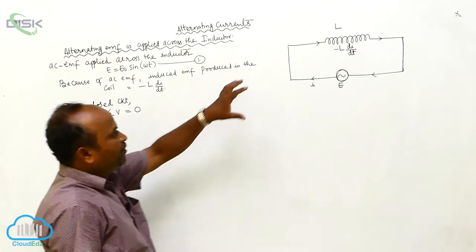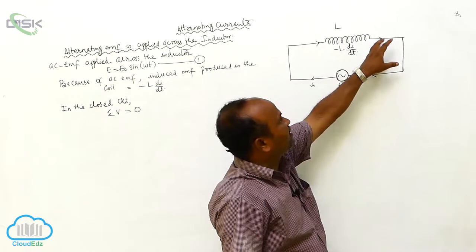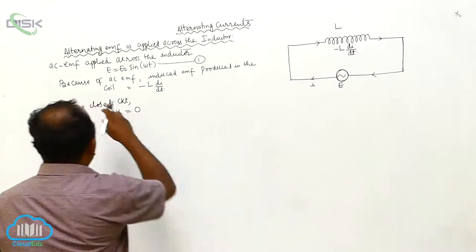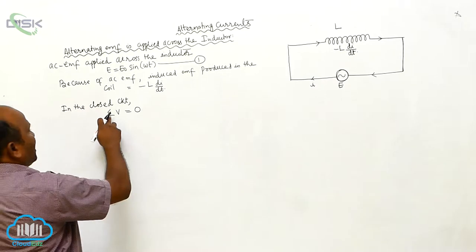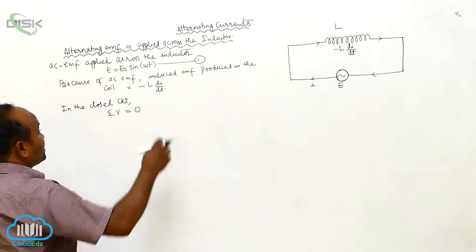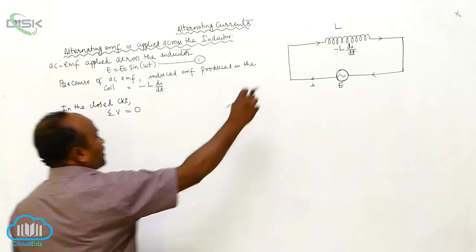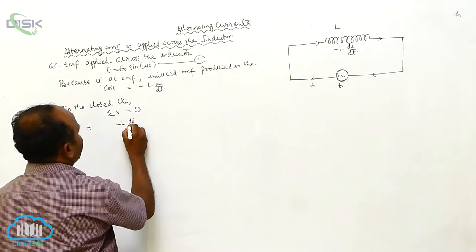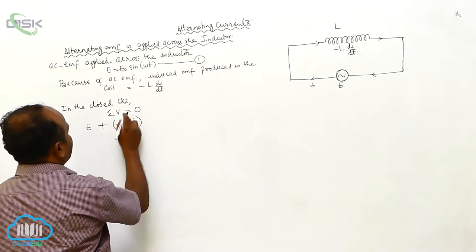Therefore, the potential difference across the source plus the potential difference across the inductor equals zero. The potential difference across the EMF is E, and the potential difference across the inductor is minus L dI/dt. The total is equal to zero.